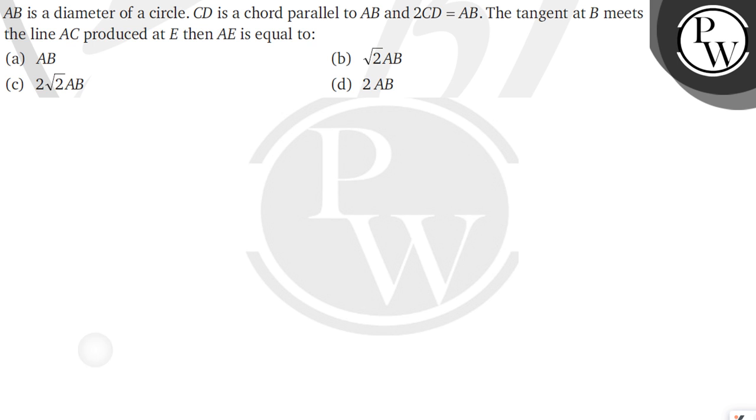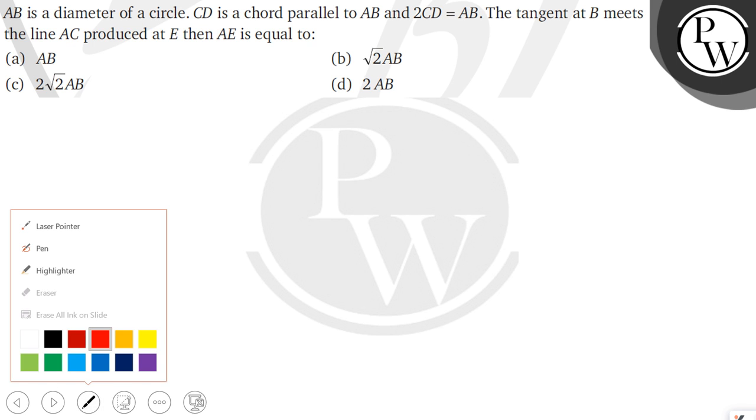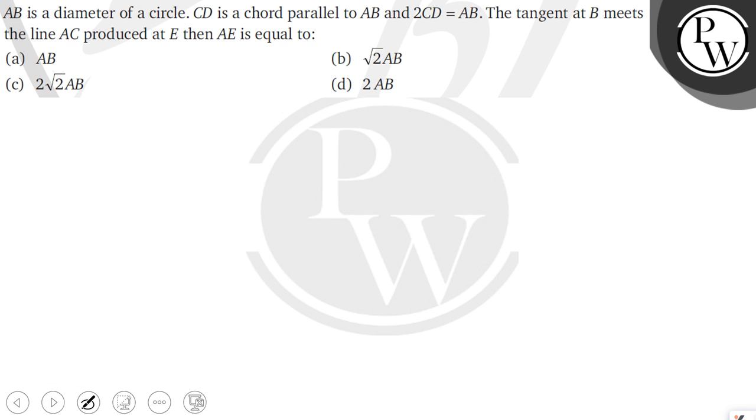First of all, we make a diagram out of the information given in the question. So let us draw a circle first. Suppose this is our circle and let us draw AB as the diameter of the circle. So AB as the diameter of the circle and O is its center.